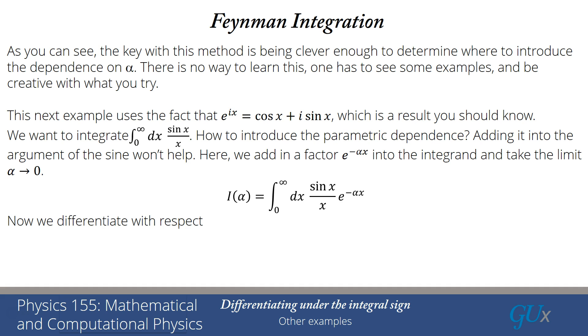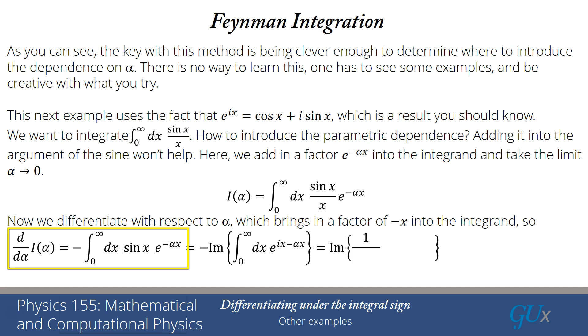If we differentiate with respect to alpha, di d alpha is going to have that x cancelled by the minus x that comes about by taking the derivative with respect to e to the minus alpha x. So we get di by d alpha equal to minus integral 0 to infinity dx sine x e to the minus alpha x. Now it turns out this integral can just be evaluated. I can write the sine as an exponential. So here's where we use this Euler relation. The integral is actually equal to minus the imaginary part of the integral 0 to infinity dx e to the i x e to the minus alpha x.